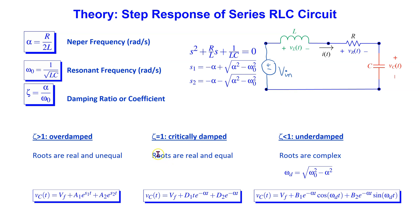If zeta is equal to 1, then the response is critically damped. In this case, the roots are real and equal. The expression for the voltage across the capacitor has this general form, and it depends only on Vf and alpha.